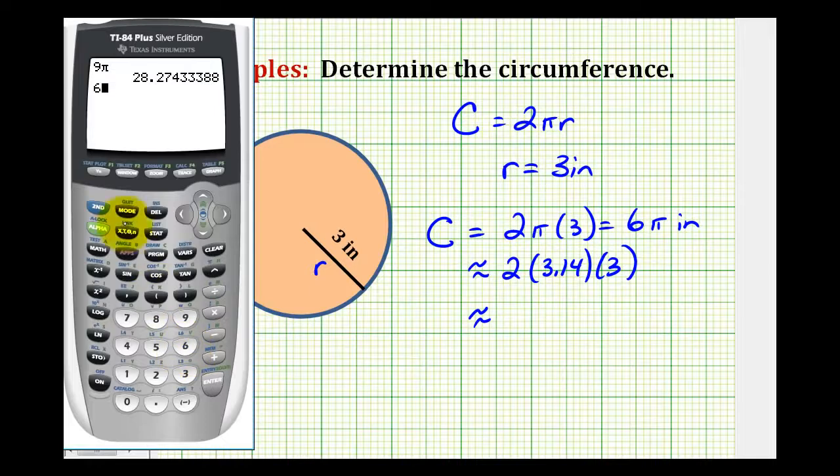So six times pi is approximately eighteen point eight five inches. And just to show this calculation here where we use an approximation for pi, we'd have two times three point one four times three. And notice how the answer is slightly different.